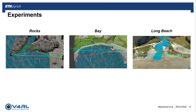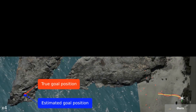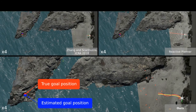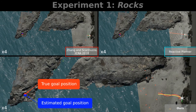We evaluate our perception-aware planning pipeline in a set of three photorealistic simulations, where some portions of the models are specifically built to create hard challenges for camera-based state estimators. The metric of comparison is the missed distance from the goal, meaning the distance between the robot's ground truth position and the real goal position at the end of the mission. We compare our pipeline against a purely reactive planner that does not consider perception when generating trajectories, and the perception-aware path planner proposed by Zhang and Scaramuzza at ICRA 2018. The first scene, called Rocks, consists of rocky coasts cut in between by a medium-sized river.